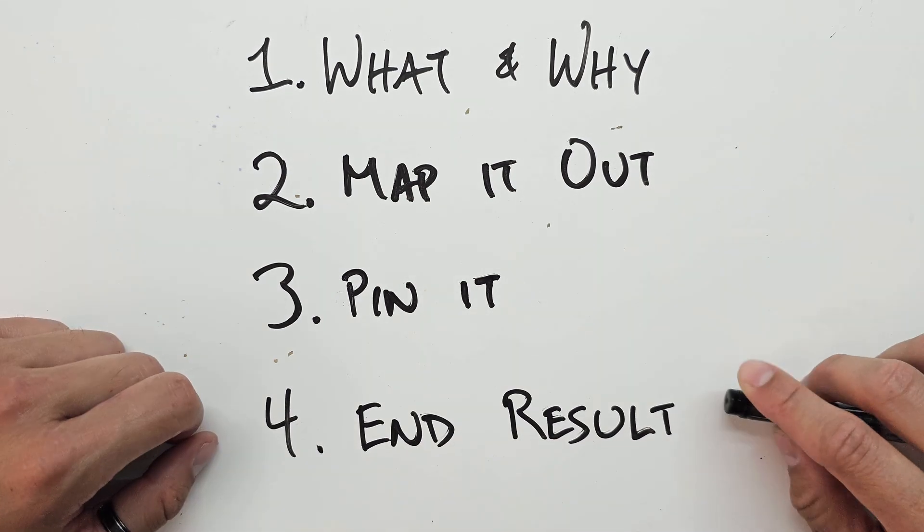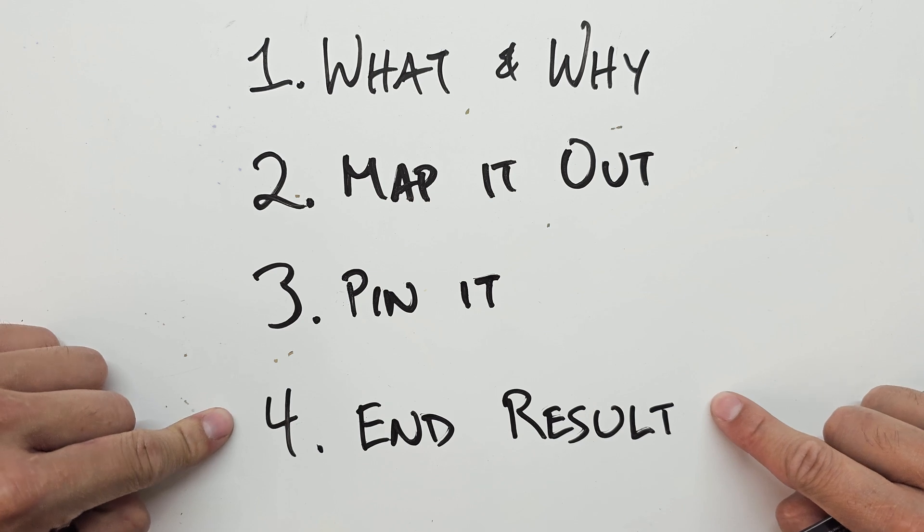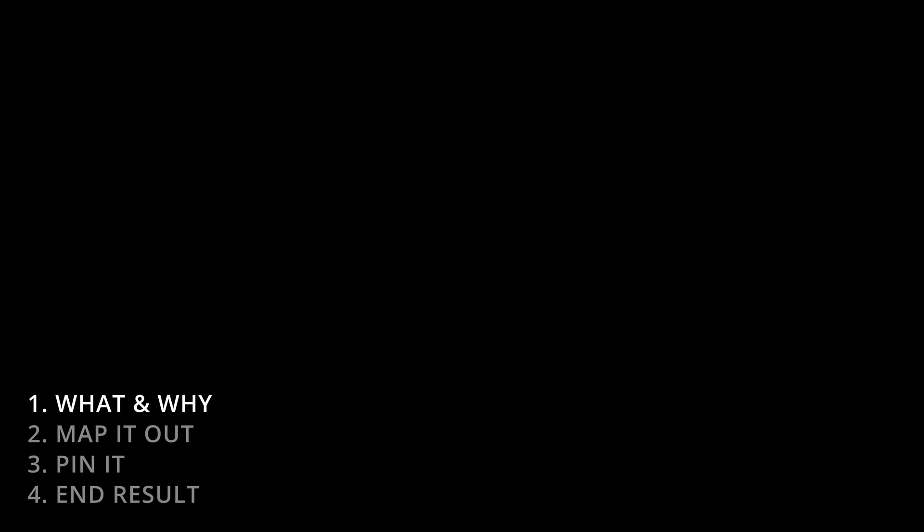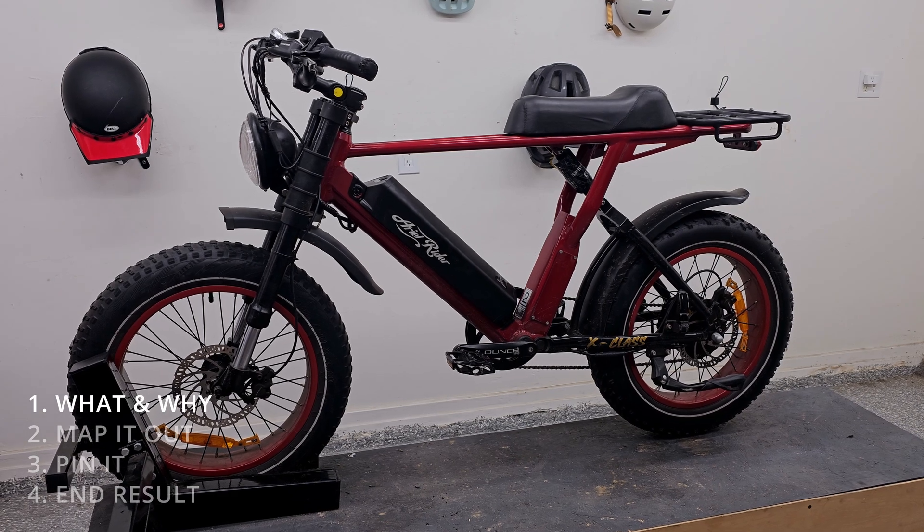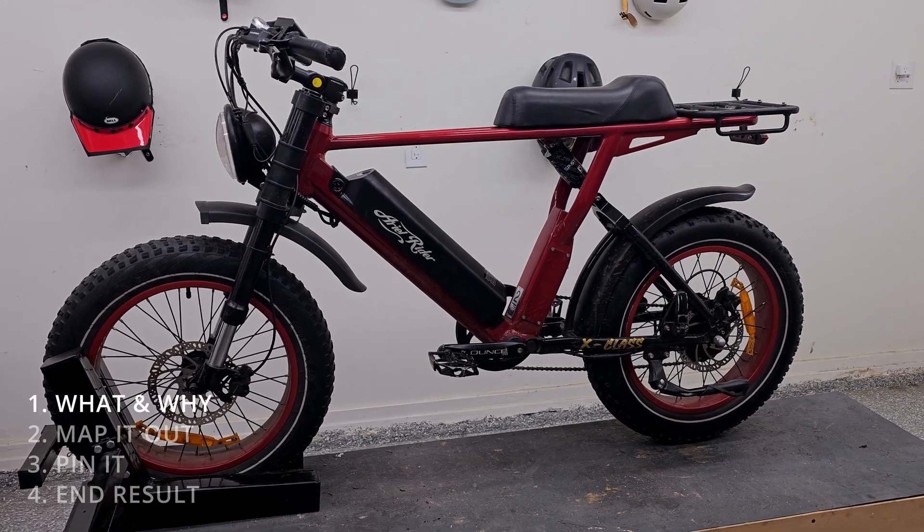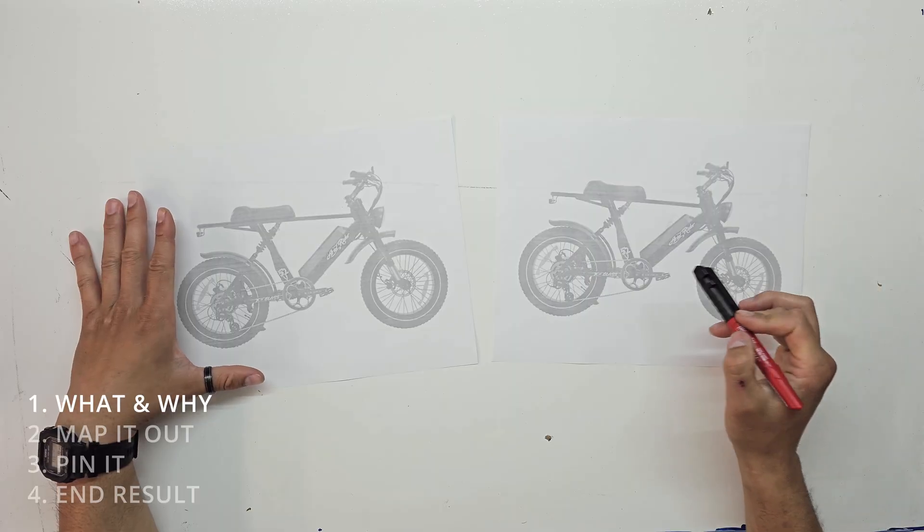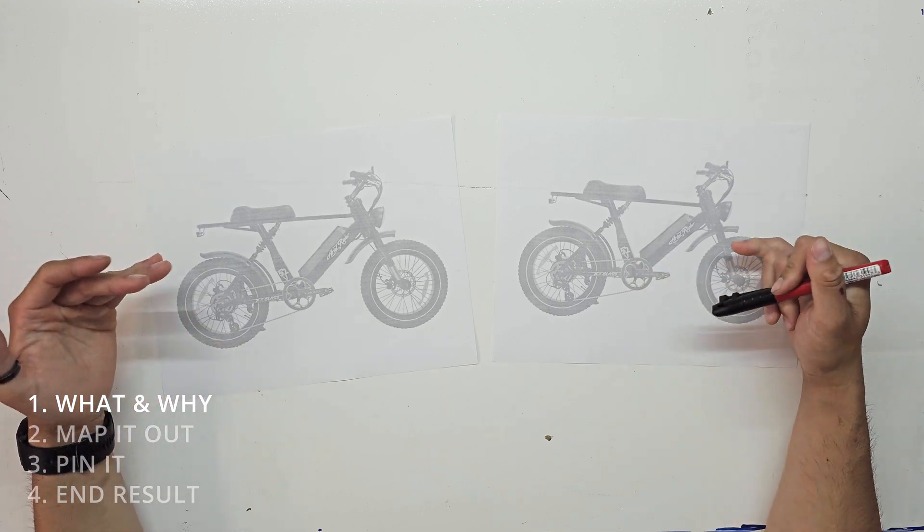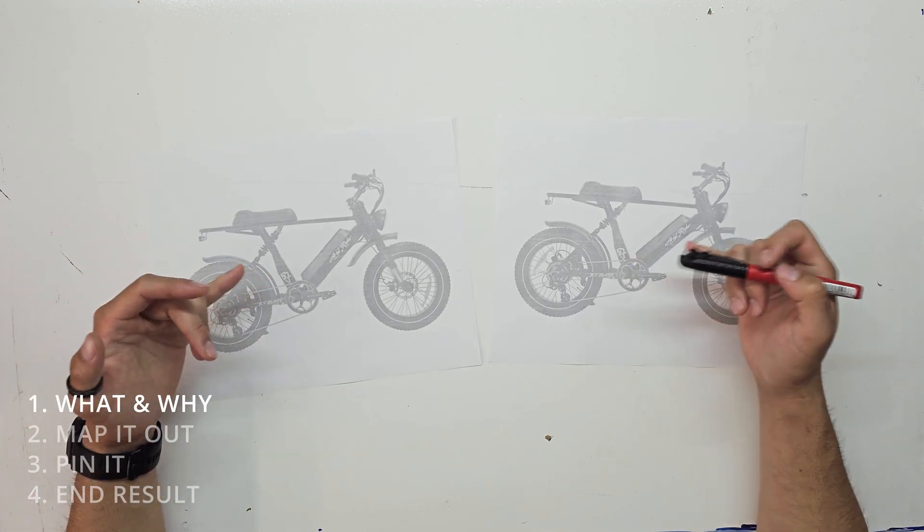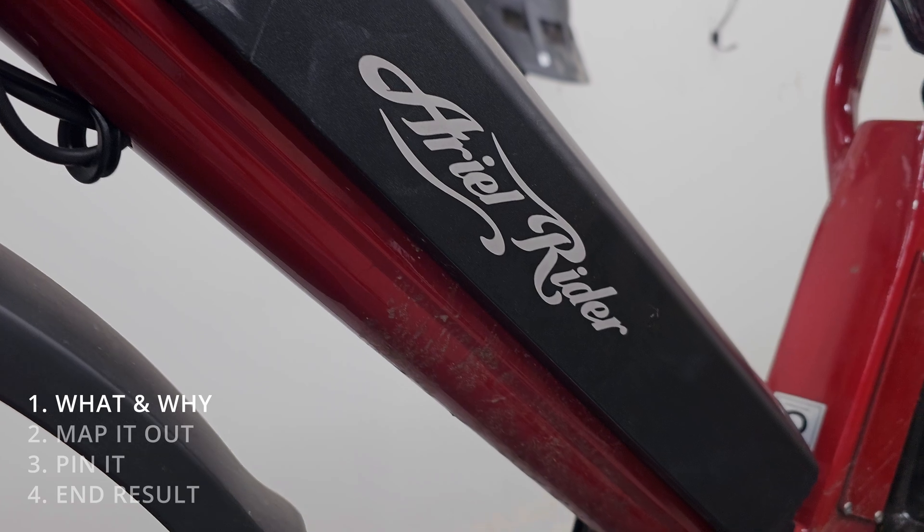And lastly, we'll get to see the end result. That one is pretty self-explanatory. Okay. So the bike we're using for this demo today is an Ariel Rider X-Class. I couldn't find a picture of the 48 volt version, but we're using the 48 volt version, not the 52 volt version. It's older. It's in our shop. It doesn't work right now.